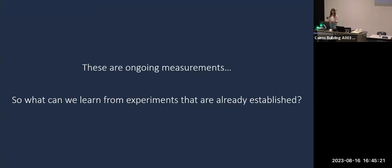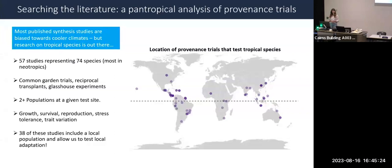These are ongoing measurements and we'll also be measuring functional traits and thermal tolerance. It's worth noting from other studies that sometimes it takes a while for local adaptation to be present or observed in these experiments - a particular drought or heat stress event may reveal differences in growth strategies. In the meantime, what can we learn from already established experiments? Most synthesis studies looking at local adaptation or home site advantage have a bias towards temperate, cooler climates. I've identified 57 studies representing 74 species, the majority in the neotropics, representing common garden trials, specific transplants, and glasshouse experiments with at least two or more populations within a species at a given test site.